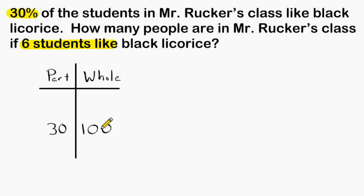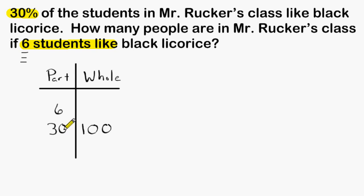The next thing we have to do is figure out where the number 6 is going to go in our ratio table. It says that 6 students like black licorice, and we know that not everybody in this class likes black licorice because only 30% of the students like it. Therefore, the 6 students who like black licorice must represent part of the class, so we must write 6 in the part column.